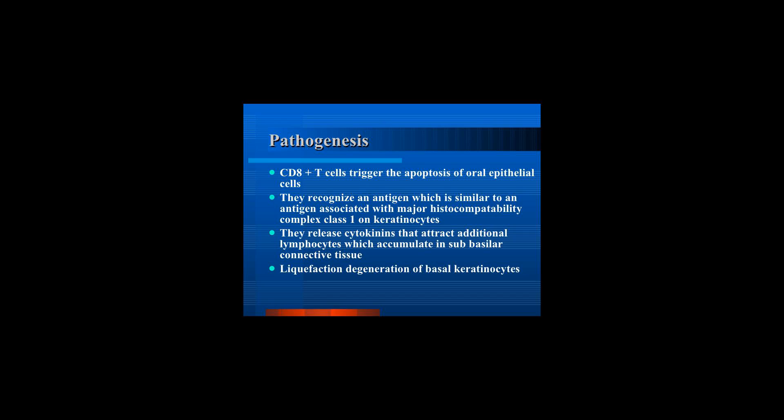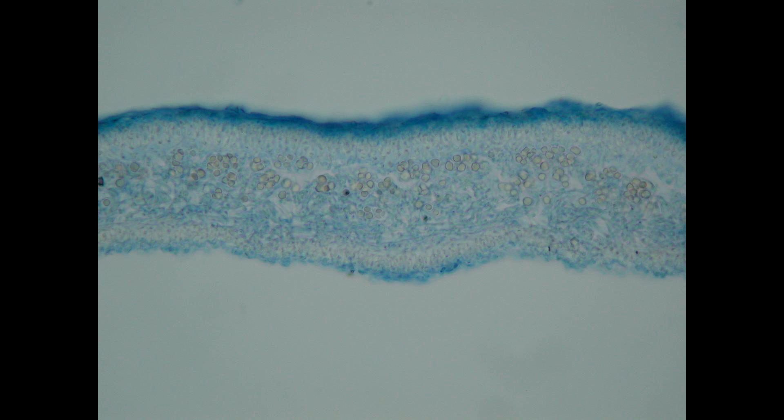The fungus surrounds the algal cells, often enclosing them within complex fungal tissues unique to lichen associations. In many species the fungus penetrates the algal cell wall, forming penetration pegs or haustoria similar to those produced by pathogenic fungi.